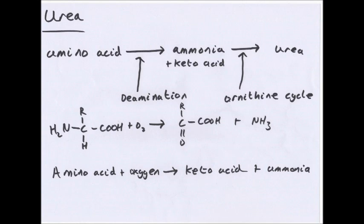So, how is urea formed? An amino acid becomes ammonia plus a keto acid. Amino acids are broken down by deamination: an amino acid plus oxygen becomes a keto acid and NH3, which is ammonia. The keto acid involves the OCOO bond. In deamination, nitrogen-containing amino groups are removed from excess amino acids, forming ammonia and organic acids. The organic acids can be respired to give ATP or converted to carbohydrate and stored as glycogen. Ammonia, which is a by-product, is too toxic for mammals to excrete directly, so it is combined with CO2 in the ornithine cycle.